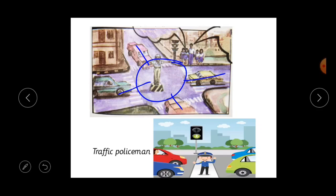In Dharwad, Jubilee Circle — you might have heard, right? So this is a circle where four roads meet. Now the question may come in your mind: why is he standing like this? What is the duty of this traffic policeman? The traffic policeman controls the movement of people and vehicles in his duty. So what is the duty of the traffic police?